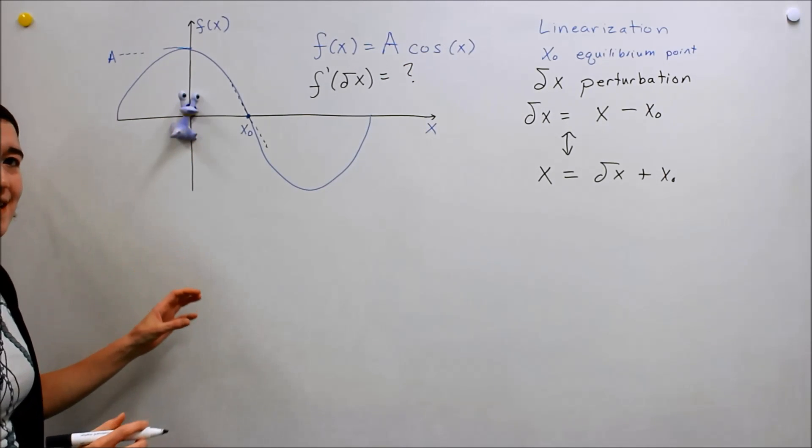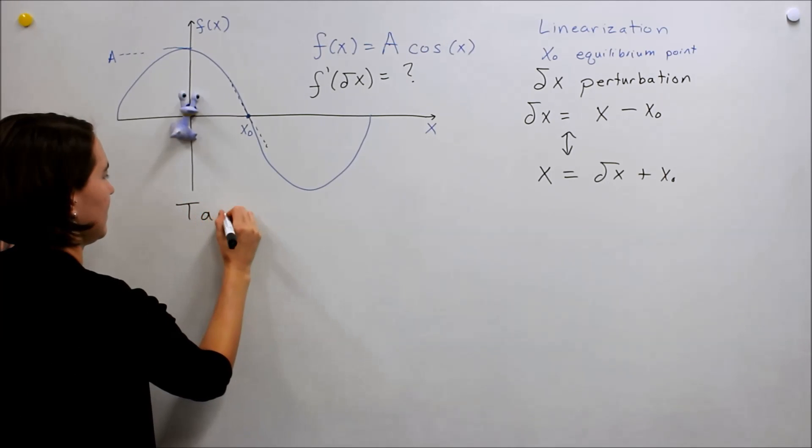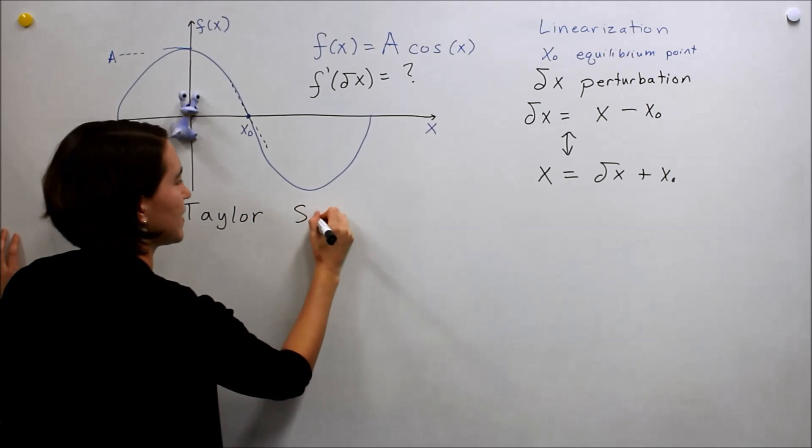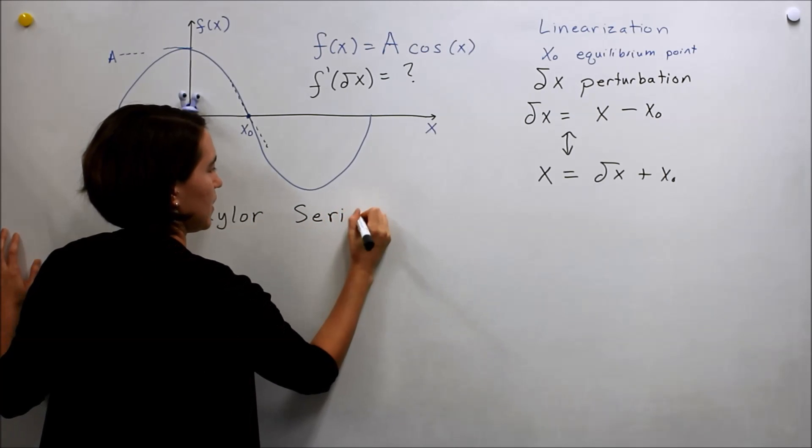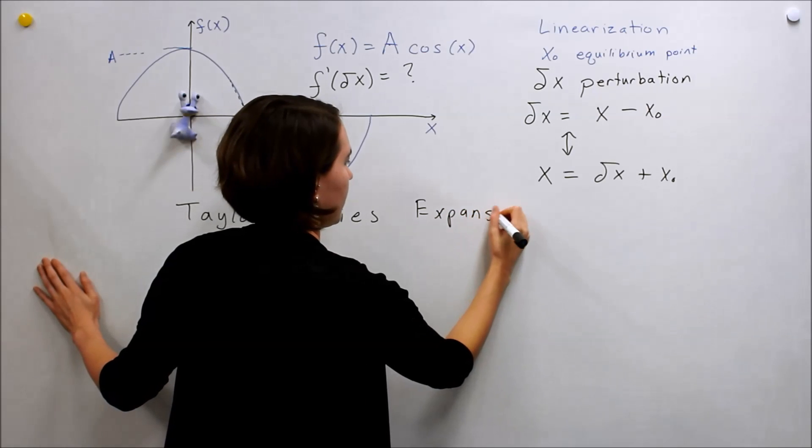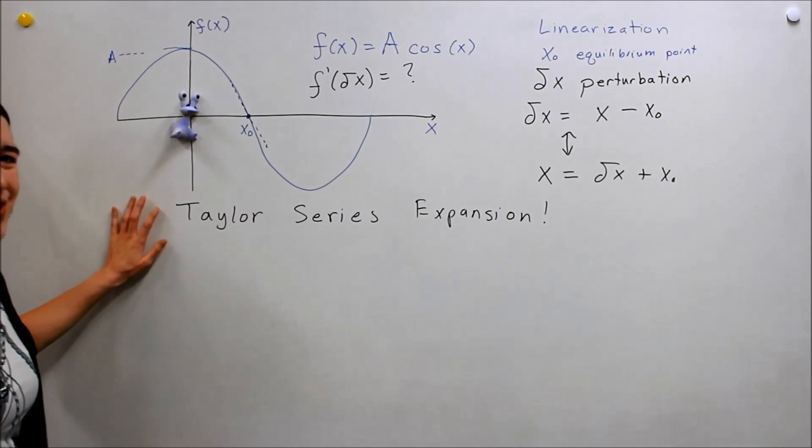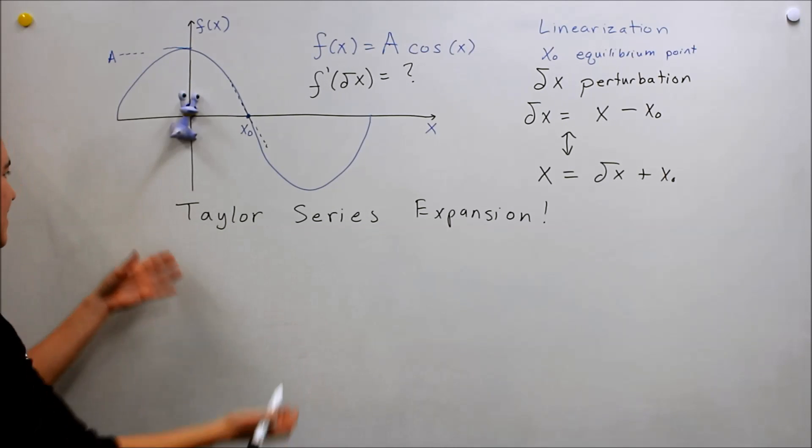The key is the Taylor series, Taylor series expansion. Very important. So this is the key to linearization and what this essentially says is that